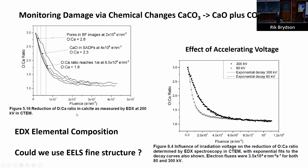In principle we could use EELS as well. Changing the conditions: at 300 kV accelerating voltage we get one damage curve, but if we drop to 80 kV the damage occurs much more quickly. That's because the ionization cross-section for the damage process is bigger at lower kV — it goes as one over the accelerating voltage. So the critical fluence also depends on the experimental conditions.